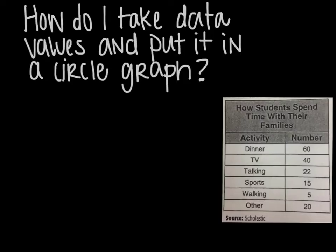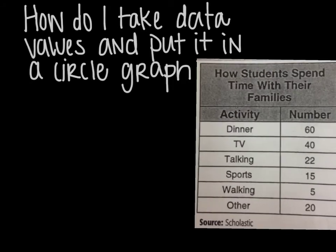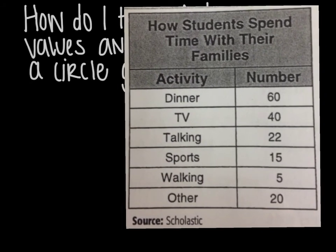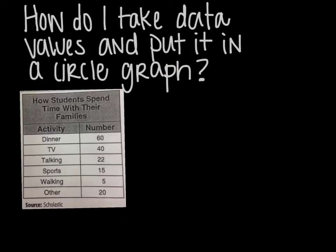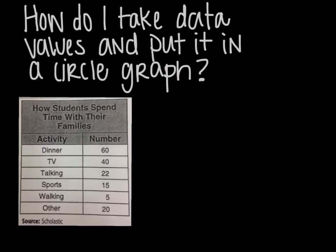Next question. How do I take data values and put it into a circle graph? So sometimes you're just given data like this problem here. And so what you have to do first is figure out your part to whole items of information. So really, it's pretty easy. You have to just know the total. So at the end, if you're not given it, you're going to have to count up the total. And I figure that out by adding everything up. So 60 plus 40 plus 22 plus 15 plus 5 plus 20 gives me a total of 657 people. Now that I know that, I can focus on my part to whole relationships.